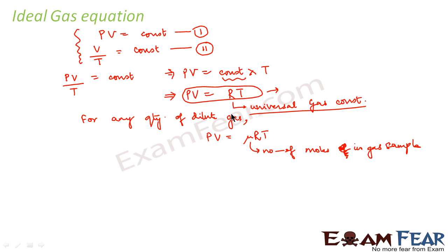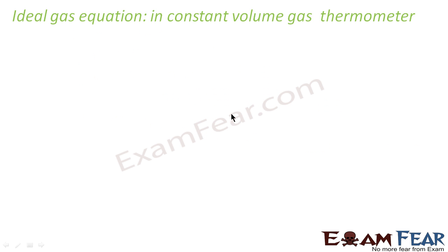It is important to note that this ideal behavior holds true only at low temperature range, for low density gases. As we go towards real gases, we find deviation from the ideal behavior. So the ideal gas equation is applicable only at low temperatures, and only low density gases obey this equation. Now let us see how the ideal gas equation applies to the constant volume gas thermometer.